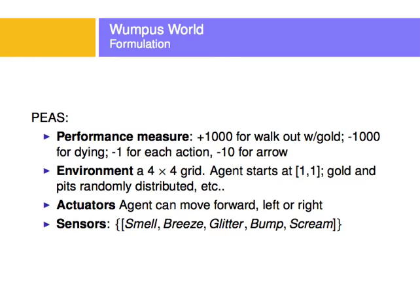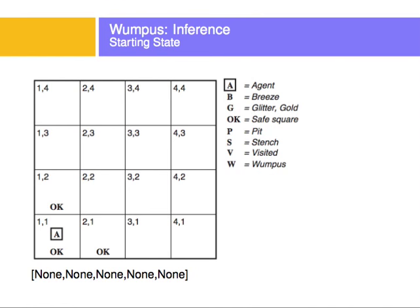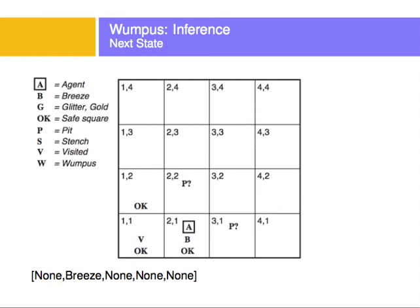Let's look at what the player will be feeling at each step. The player starts at 1,1 — the agent. It doesn't feel anything; the sensors are none for smell, breeze, and glitter. We know that these squares are okay because there's no adjacent anything. Next, we move to 2,1. This will be marked with a V for visited. We go there and it's okay, but there's a breeze — sensors show none, breeze, none, none, none. The question is whether there's a pit here, or here, or here — those are dangerous places.